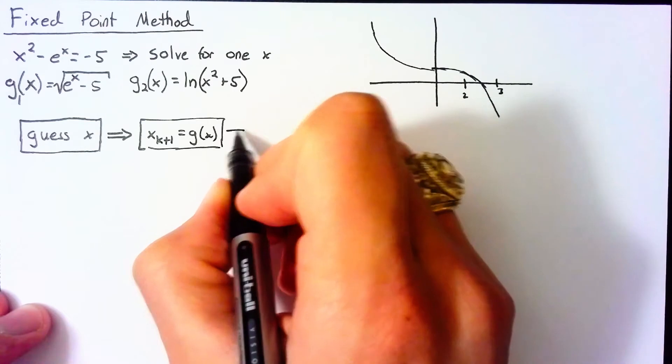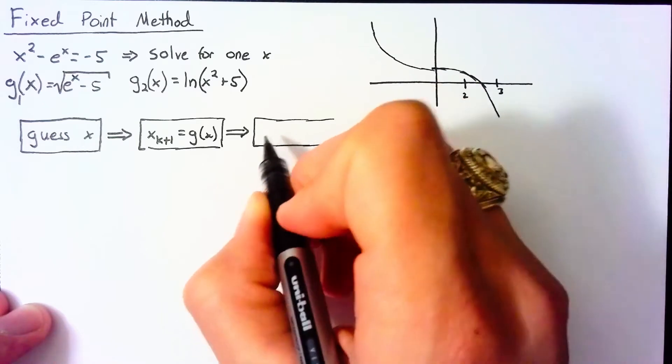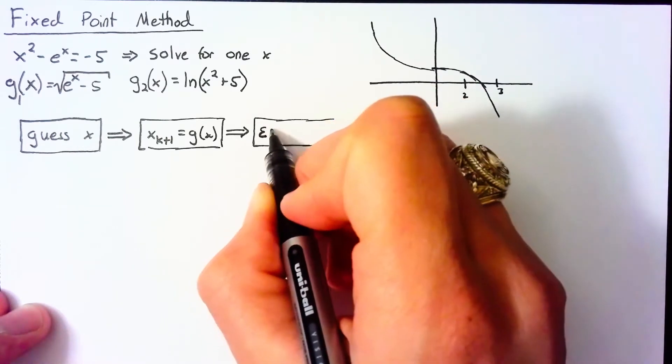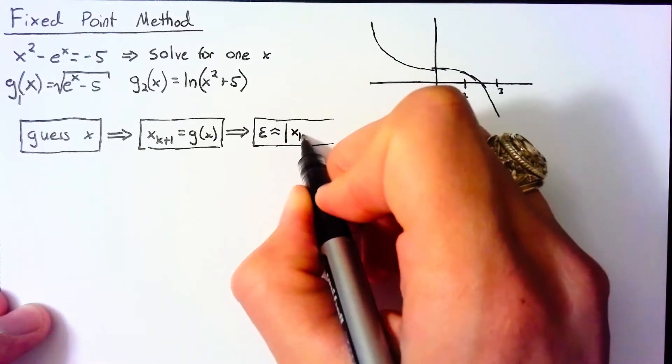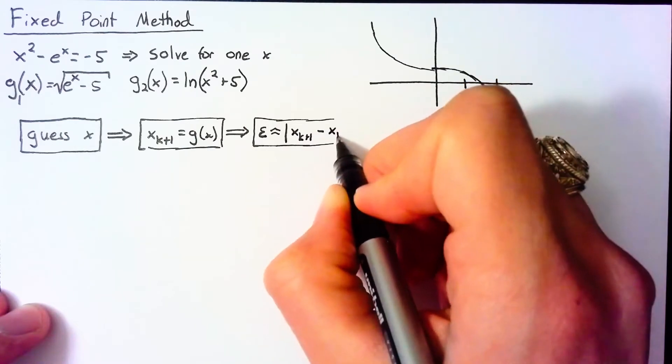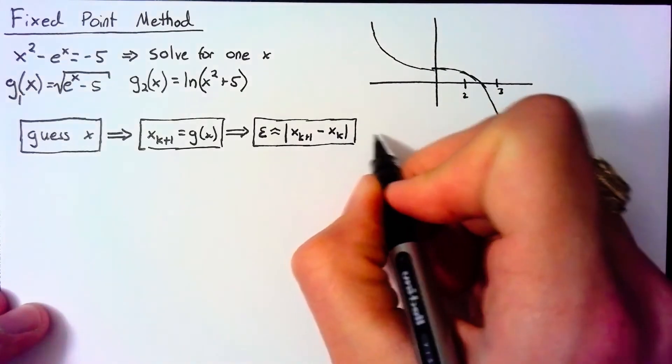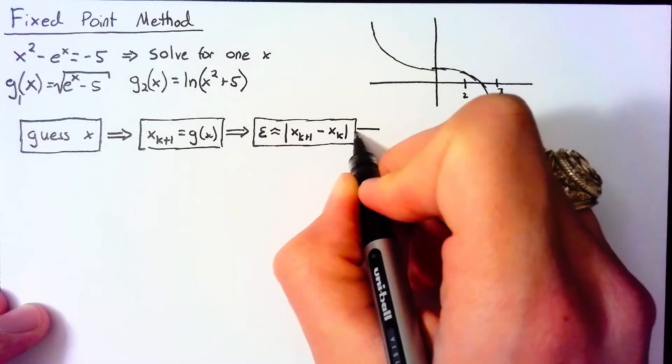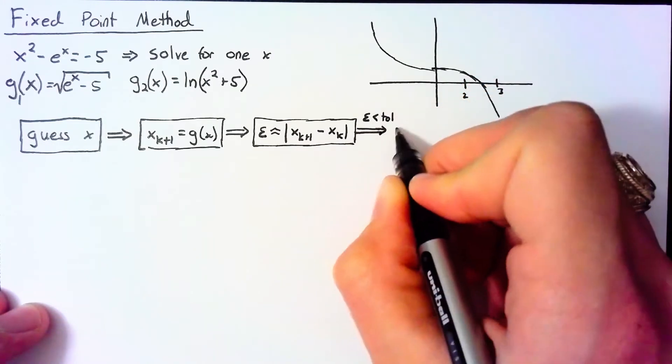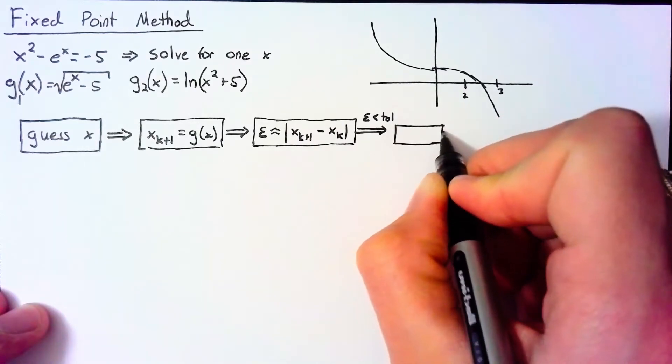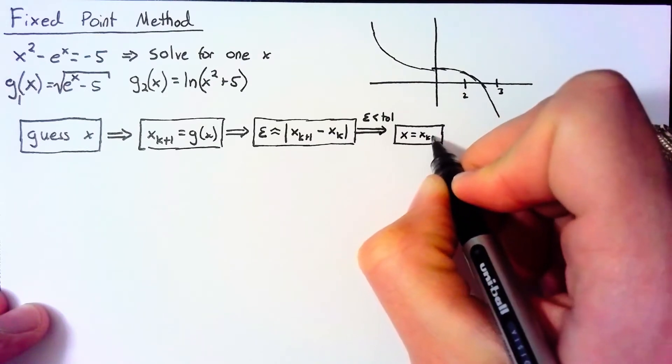We use this value and the previous value to try and get an estimate for error. So the way we say that is that we estimate that our error is somewhere in the range of the difference between our current guess x_(k+1) and our guess before that x_k. So just as before, we have two options at this point. The first option is that our epsilon is less than our tolerance.